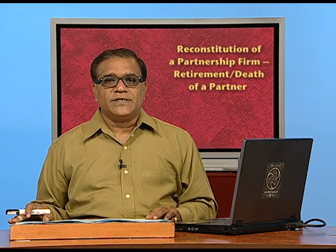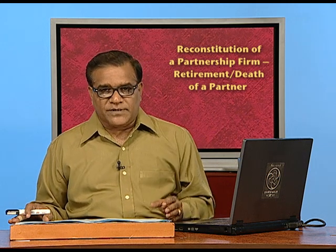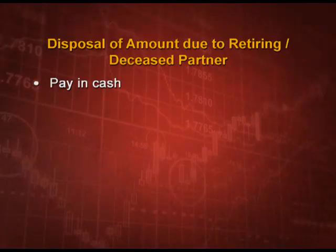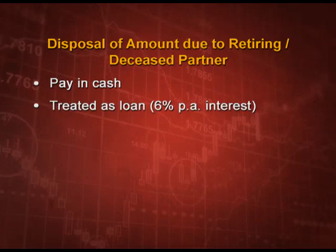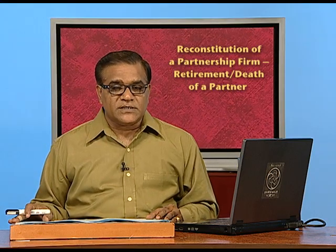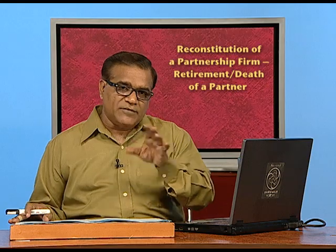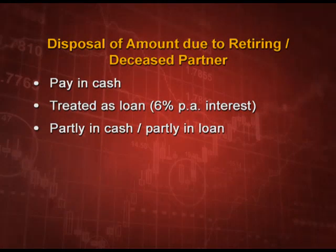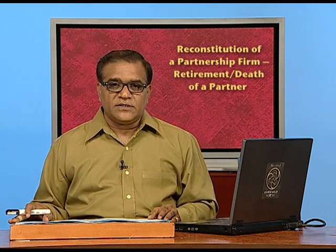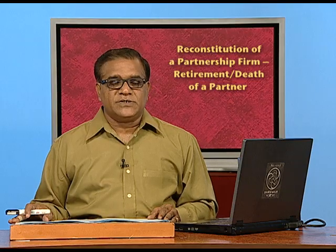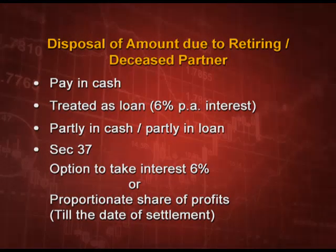Now, how to calculate the amount due to a retiring or deceased partner and how to dispose of it? First option: you can pay in cash or by cheque. You may also treat it as a loan, but then you have to pay 6 percent per annum interest. Sometimes you can have a combination - partly in cash and partly in loan - but interest will be applicable on the loan amount. Then we have the option under section 37 of the Indian Partnership Act, which says you may take interest at 6 percent or take a proportionate share of profit till the date of settlement.